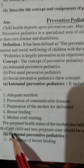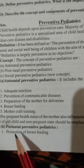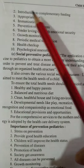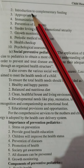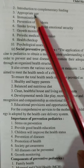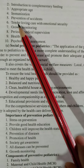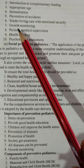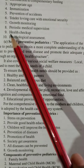Postnatal preventive pediatric includes: first, promotion of breastfeeding; second, introduction to complementary feeding at appropriate age; third, immunization; fourth, prevention of accident; fifth, tender loving care and emotional security; sixth, growth monitoring; seventh, periodic medical supervision.